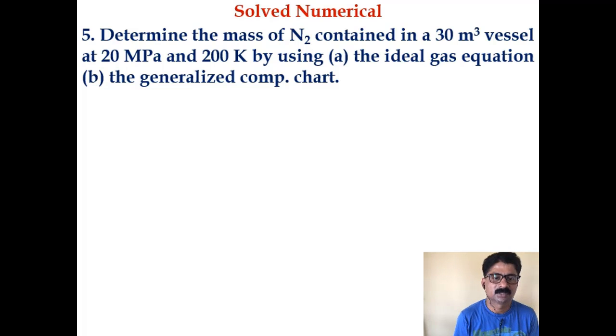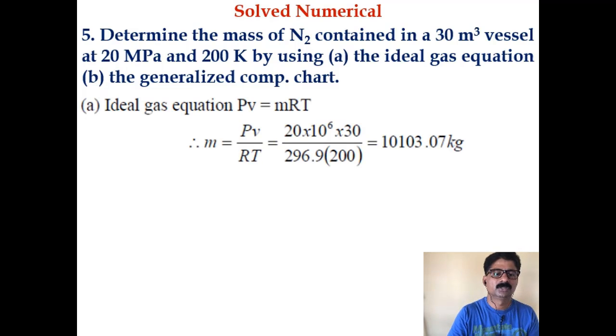Let us solve this problem. Determine the mass of nitrogen contained in a 30 cubic meter vessel at 20 megapascal and 200 Kelvin by using the ideal gas equation then generalized compressibility chart. First, let us solve using ideal gas equation PV equals mRT, so m equals PV by RT.